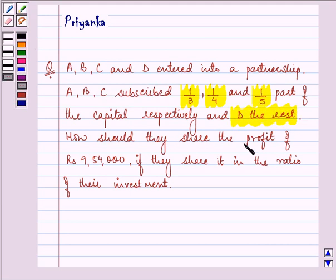How should they share the profit of Rs. 9,54,000 if they share it in the ratio of their investment?